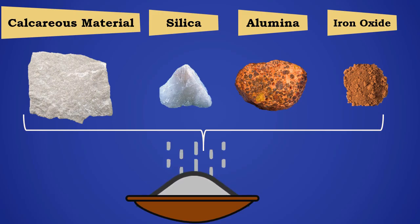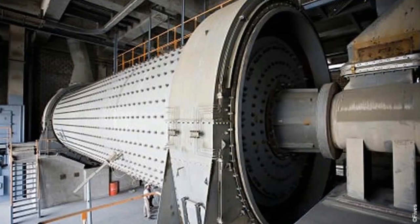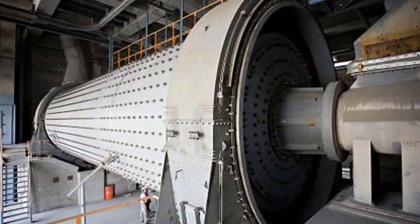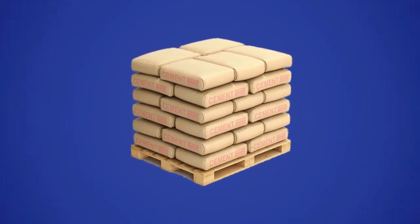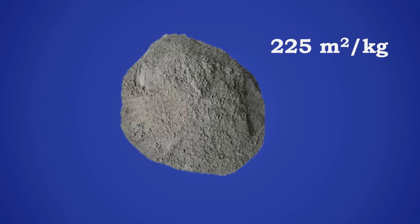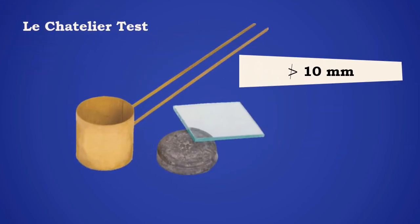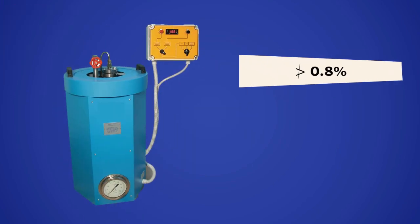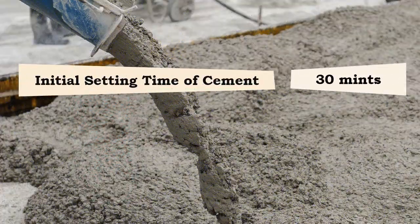The resultant clinker is ground to produce the cement. Characteristics of typical sulfate resisting cement: the fineness in terms of specific surface should not be less than 225 meters square per kilogram. The cement should not have expansion more than 10 millimeters for the Le Chatelier test and 0.8% for the autoclave test.